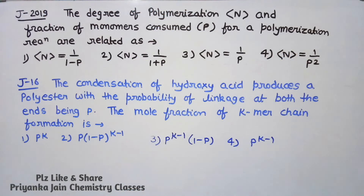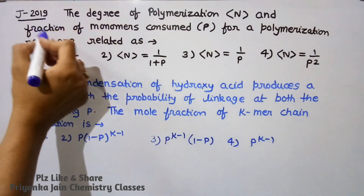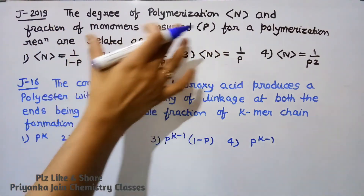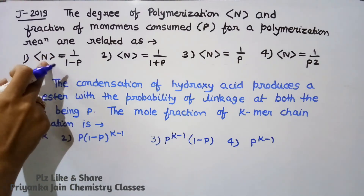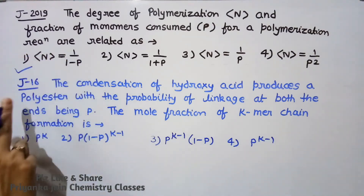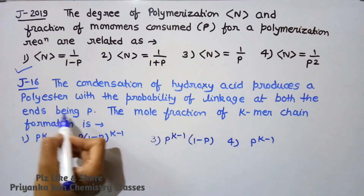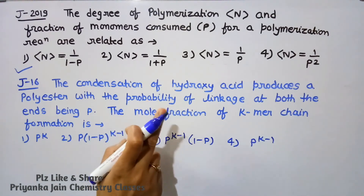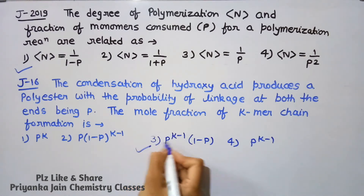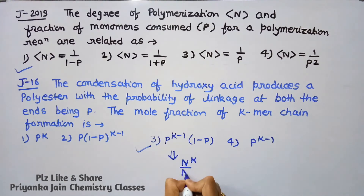From June 2019: The degree of polymerization N and fraction of monomers consumed P are related by N = 1/(1−P). From June 2016: Condensation of a hydroxy acid produces a polyester with probability of linkage P. The mole fraction of K-mer chain formation is P^(K−1)(1−P) = NK/N = XK.